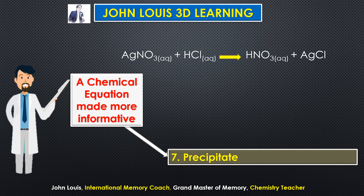The last point is the precipitate: whether one of the products formed is a solid substance or not. For example, when silver nitrate reacts with hydrochloric acid, nitric acid and silver chloride are formed. Silver chloride is a precipitate — a solid substance that settles at the bottom. This is indicated by a downward-pointing arrow after the formula of that product.